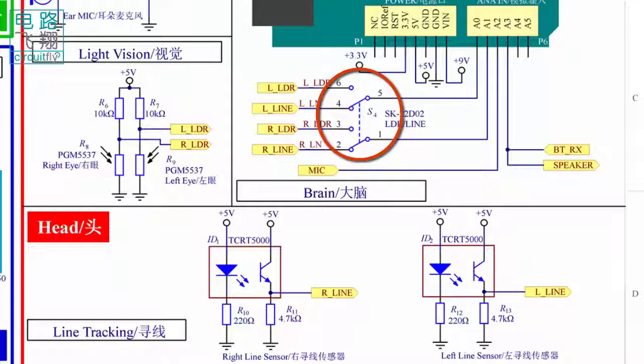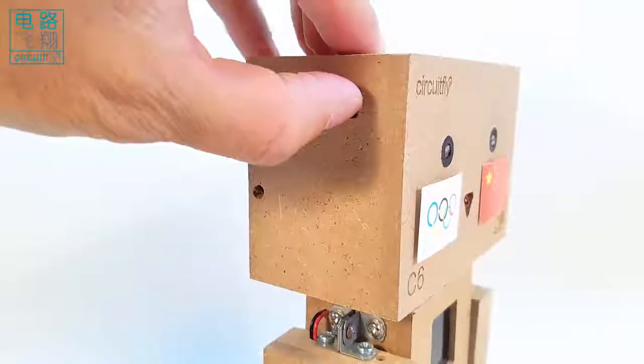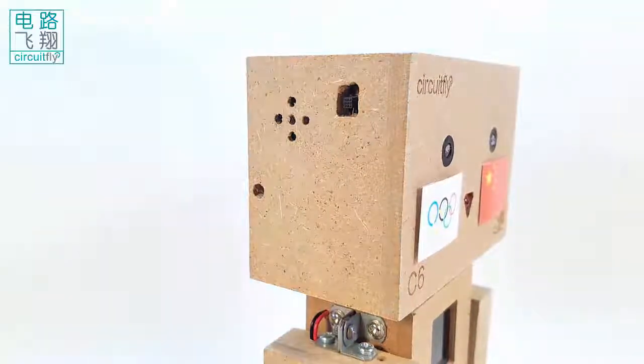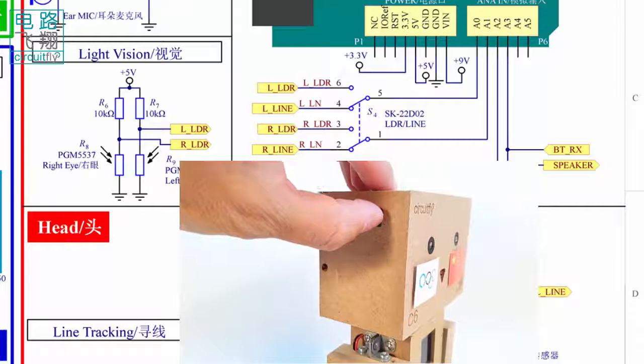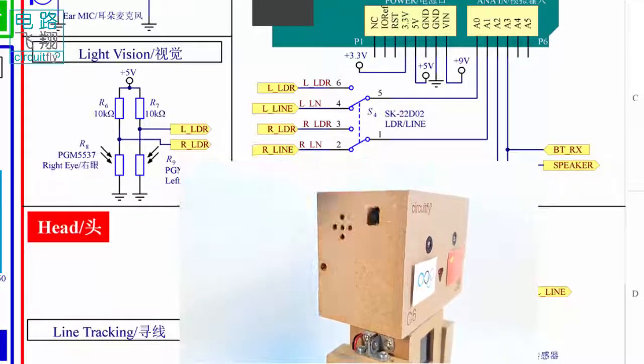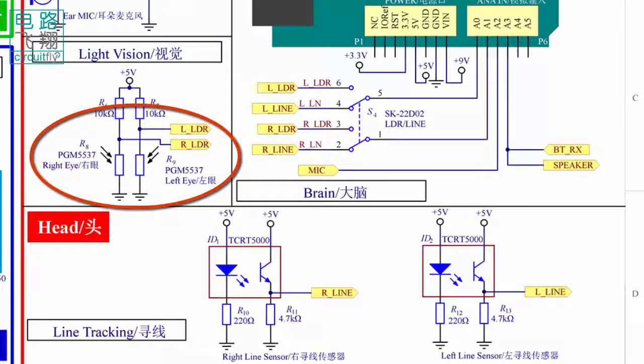要使用TCRT5000传感器，则需要把头上的一个开关拨到上方。如果拨到下方，则模拟信号输入A0和A1输入的是两个眼睛上光明电阻的信号。The two TCRT5000 are connected to the analog input pin A0 and A1. The switch on the head should be toggled up. If the switch toggled down, the two light-dependent resistors on the eyes will be connected to the pin A0 and pin A1.